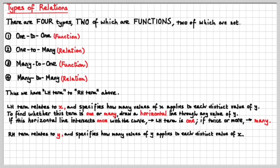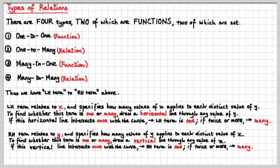The right-hand term relates to the y and specifies how many values of y apply to each distinct value of x. To find whether this term is a one or a many, we draw a vertical line through any value of x. If this vertical line intersects once with the curve, then the right-hand term is a one. If it intersects twice or more, then that right-hand term is a many.